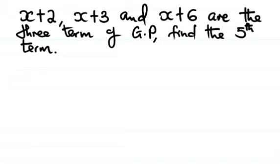You can see the solution of this question. It's about GP, geometric progression. Now x plus 2, x plus 3, and x plus 6 are the three terms of GP, and this was problem number five.